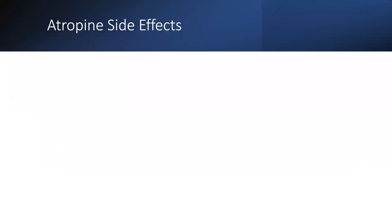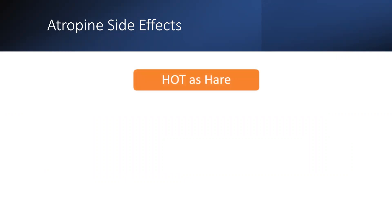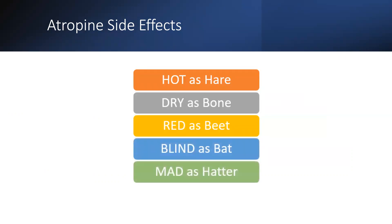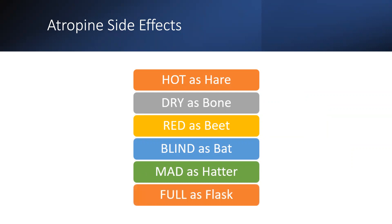For atropine side effects, remember: hot as a hare, dry as a bone, red as a beet, blind as a bat, mad as a hatter. This gives you the side effects of hot, dry, redness, blindness, and if you're mad — urinary retention.